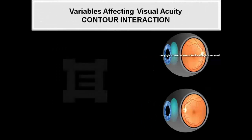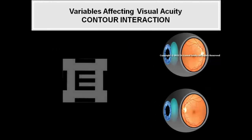8. Visual acuity can be reduced by the spatial arrangement of additional contours in the field of vision in amblyopic patients.